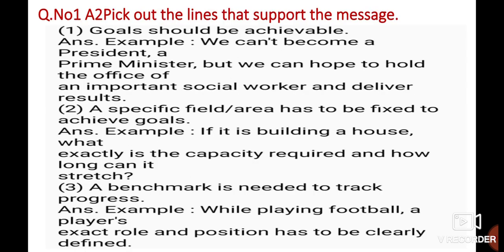Pick out the lines that support the message. The message given is 'Goals should be achievable.' The answer from the passage is: 'We can't become a president or a prime minister, but we can hope to hold the office of an important social worker and deliver results.' Second message: 'A specific field area has to be fixed to achieve goals.' Answer: 'If it is building a house, what exactly is the capacity required and how long can it stretch?' Third: 'A benchmark is needed to track progress.' Answer: 'While playing football, a player's exact role and position has to be clearly defined.'